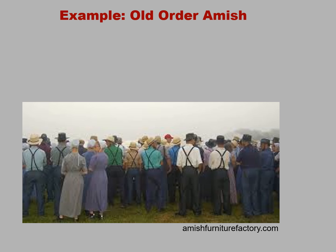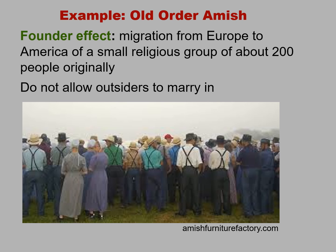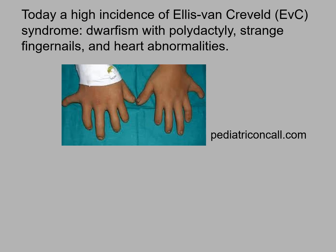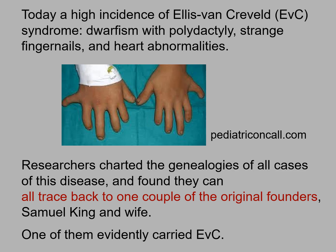One example of this is the Old Order Amish. This population experienced a founder effect when a small religious group of about 200 people migrated from Europe to America. The Old Order Amish do not allow outsiders to marry in, and they keep excellent genealogical records. Today, Old Order Amish populations in America have a high incidence of Ellis-Van-Kreveld syndrome, which is dwarfism with polydactyly, strange fingernails, heart abnormalities, and other problems. Researchers charted the genealogies of all cases of this disease today, and they can all trace back to one couple of the original 200 founders — Samuel King and his wife. So evidently, one of them carried Ellis-Van-Kreveld syndrome.